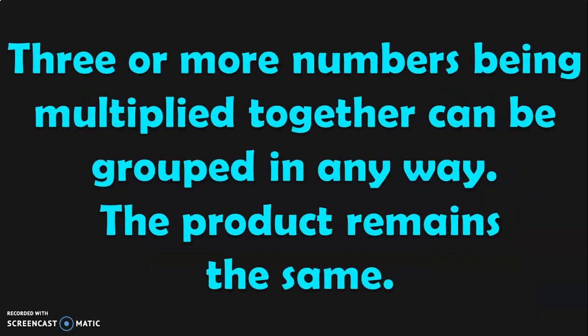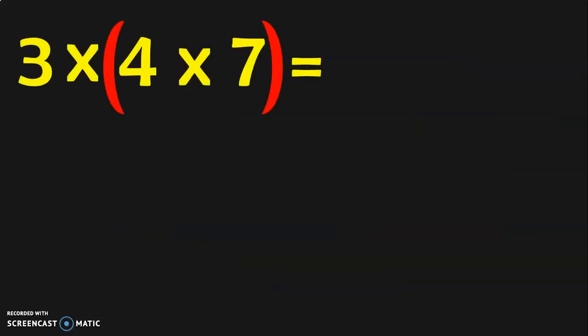Let us go on to the second property now. Three or more numbers being multiplied together can be grouped in any way and the product remains the same. This can be understood better with the help of an example. We have the number 3 into 4 into 7.